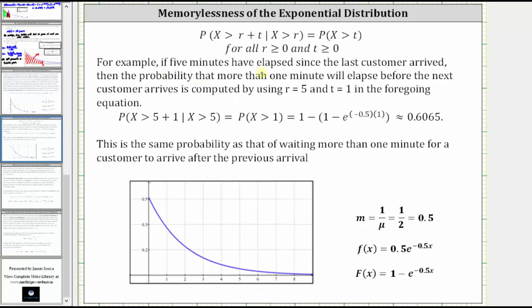For example, if five minutes have elapsed since the last customer arrived, then the probability that more than one minute will elapse before the next customer arrives is computed by using r equals five and t equals one in the equation above, which gives us the probability that X is greater than five plus one, given X is greater than five, is equal to the probability that X is greater than one. Again, where r is five and t is one.